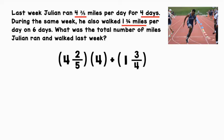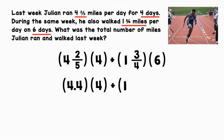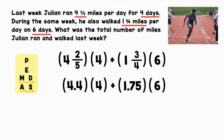We have fractions with uncommon denominators, so we can either find common denominators or convert these fractions to decimals, which is what I'm going to do. So we have 4 as a whole number, and 2 divided by 5 is 0.4. Then 1 is a whole number, and 3 divided by 4 is 0.75. In order to evaluate this expression, let's use order of operations. First we have parentheses, but they're being used to indicate multiplication because there's nothing to evaluate inside them and they're sitting right next to each other. So we have 4.4 times 4, and we're going to address that in the multiplication step.